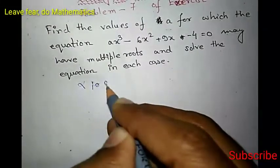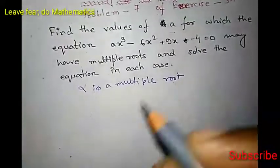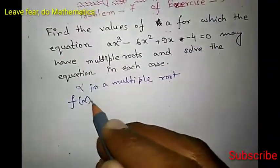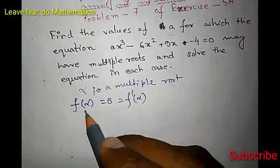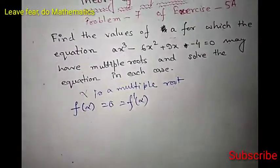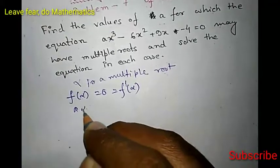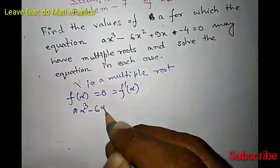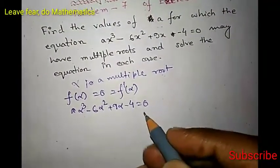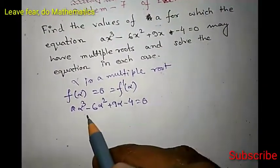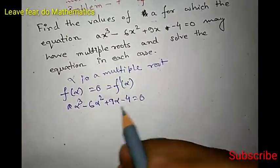So let's say alpha is a multiple root. Alpha being a multiple root implies f(alpha) equals 0 and f'(alpha) equals 0. So what is f(alpha)? Put alpha in place of x. Then we will have A alpha cubed minus 6 alpha squared plus 9 alpha minus 4 equals 0. This is our equation from f(alpha) equals 0.